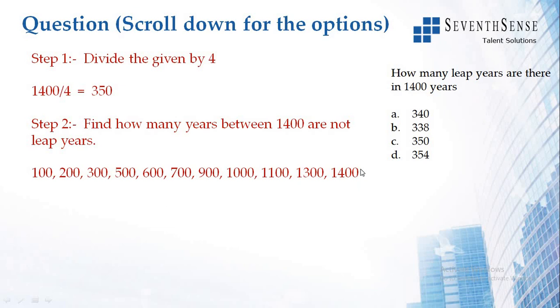That is 100, 200, 300, 500, 600, 700, 900, 1000, 1100, 1300, and 1400. In total there are 12 non-leap years.